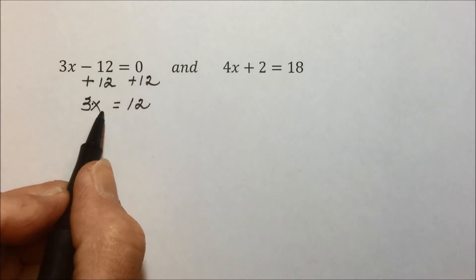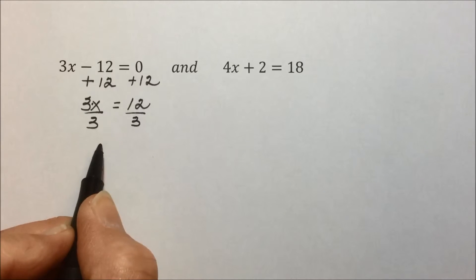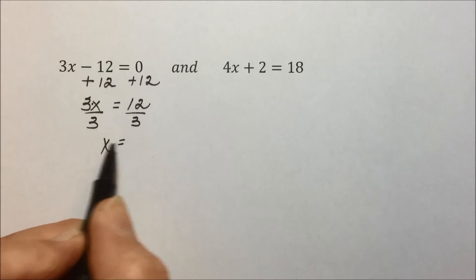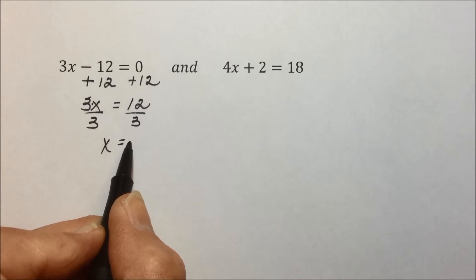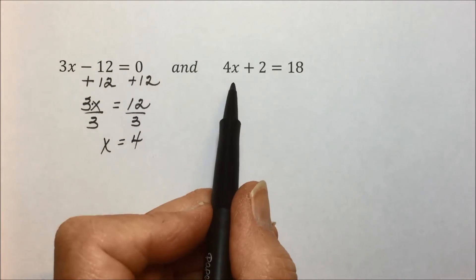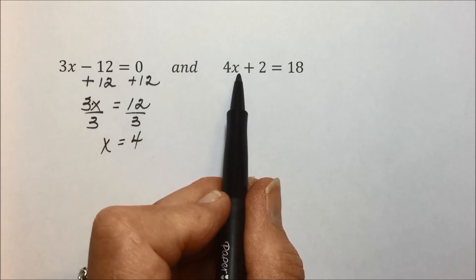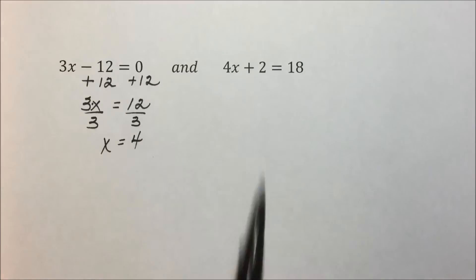Last thing being done to the variable is multiplication. We can undo multiplication with division. To maintain equality, divide both sides by 3, and 12 divided by 3 leaves 4. We could plug this 4 in and see if it works. 4 times 4, replacing x with 4 is 16, plus 2 is 18.